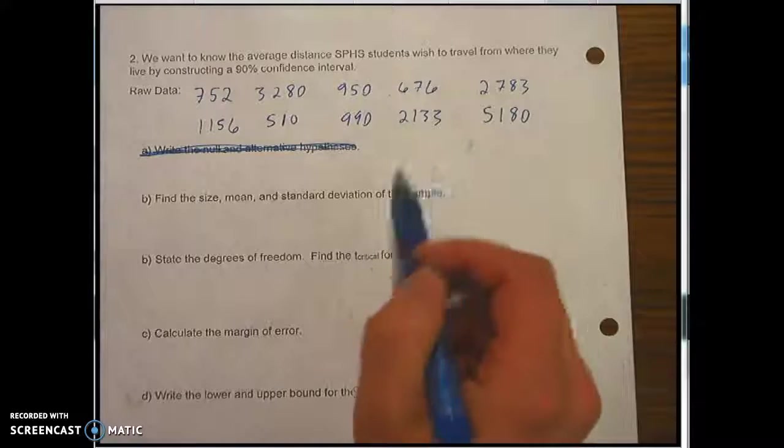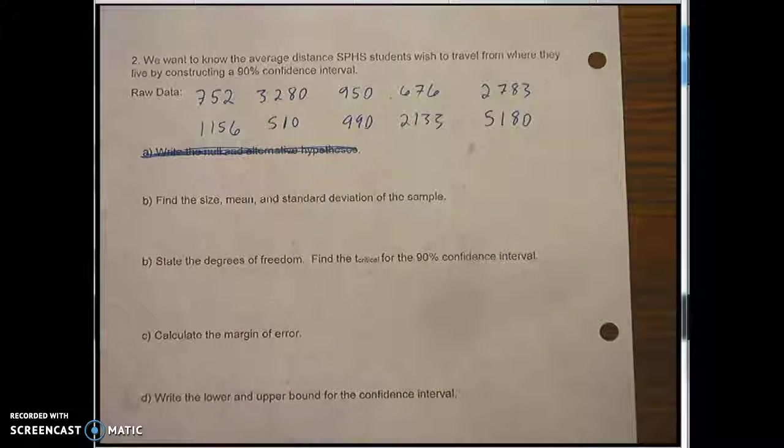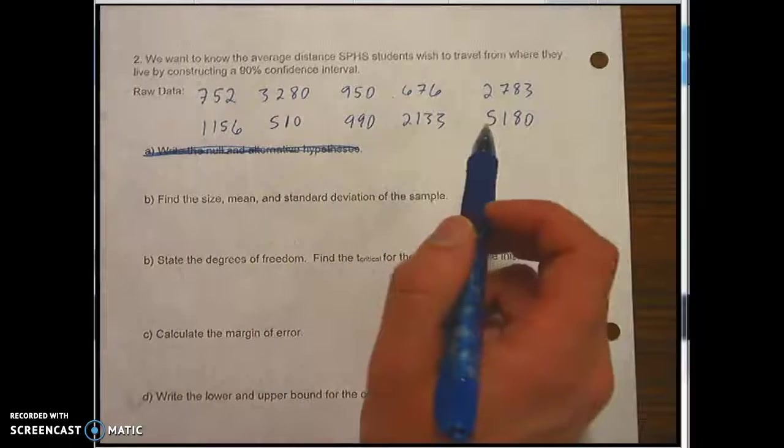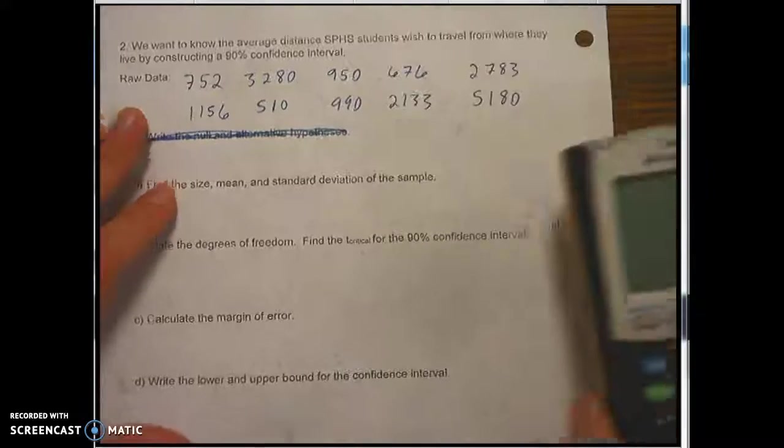Now, here's some raw data. And since we have raw data, not population, we're going to use a t value. And again, this is less than 30, so we need to assume that this is a random sample generated from a normally distributed population in order for this to work.